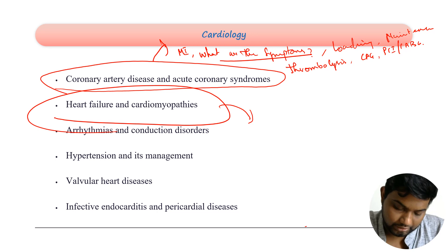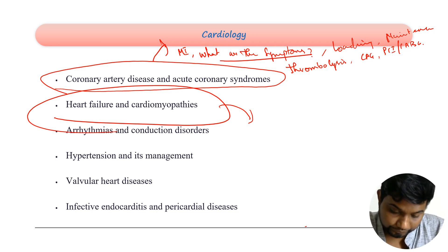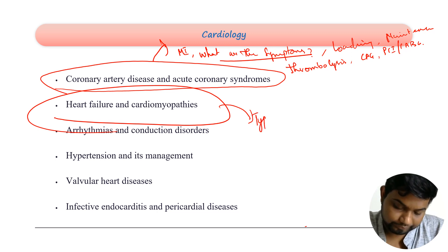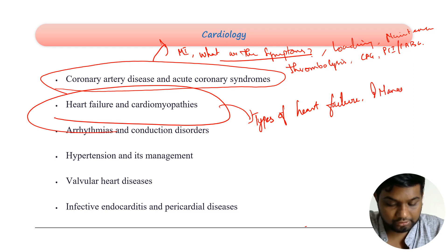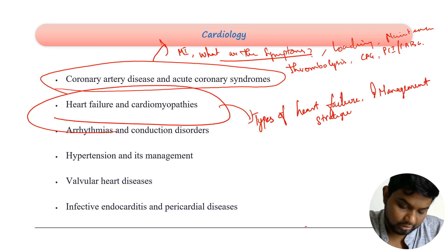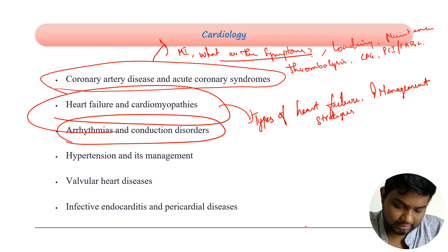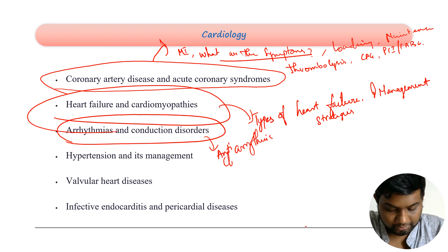Then you have cardiomyopathies and heart failure, which are the second highest areas where you expect to see a lot of questions. Types of heart failure and management strategies for each type are pretty important. Then you have arrhythmias and conduction disorders — all the anti-arrhythmic classifications are pretty high yield and you should not miss them.